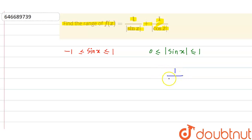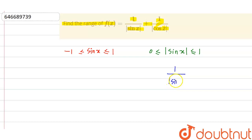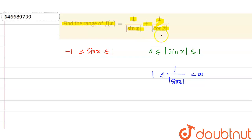So 1/|sinx| goes from one toward infinity. Similarly, 1/|cosx| also goes from one to infinity.